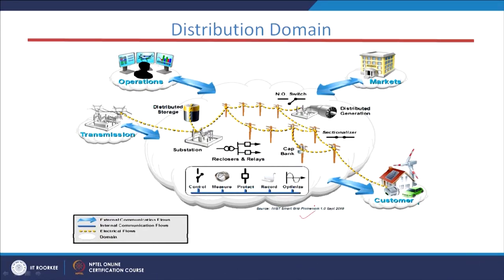The components of the distribution domain include substations, distributed storage, reclosers, relays, capacitor banks, synchronizers, distributed generation, and switches. Apart from these components, the distribution domain also interacts with the operations, transmission, customer, and markets domains for smooth operation of the smart grid system.